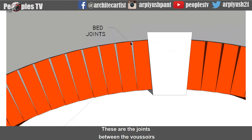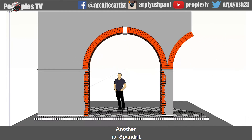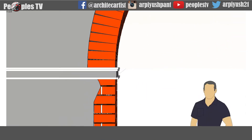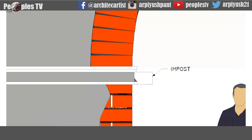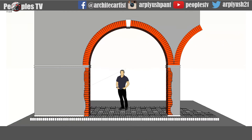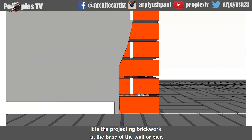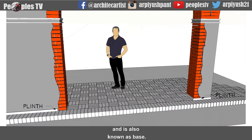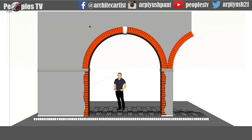The next term is bed joints — these are the joints between the voussoirs which radiate from the center. Another is spandrel — it is the triangular walling enclosed by the extrados or outer curve of two adjoining arches. Next is impost — it is the projecting course or courses at the upper part of the pier or other abutment to mark the springing line. It is sometimes molded and also known as cap. Another term is plinth — it is the projecting brickwork at the base of the wall or pier, which gives the appearance of additional strength, also known as base.